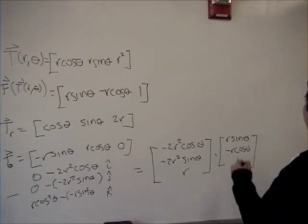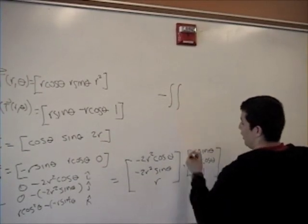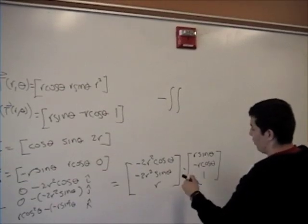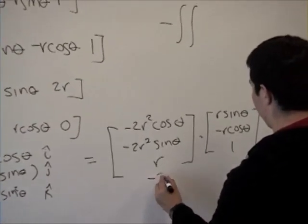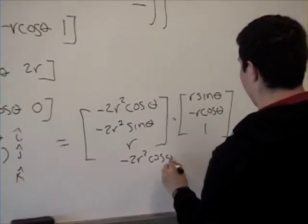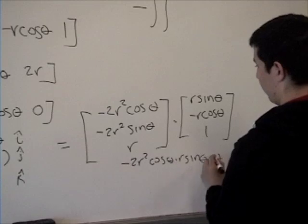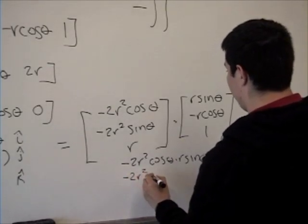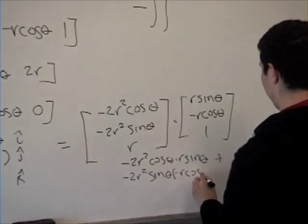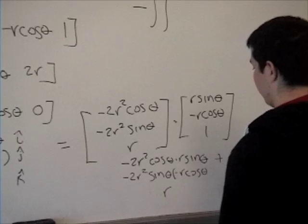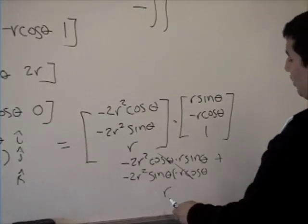So now we just set up our integral. First we have to take the product of this, which is -2r² cos(θ) times r sin(θ), -2r² sin(θ) times -r cos(θ), and just r at the end. So this and this cancels out, we're just left with r. So that means that we have to integrate r.